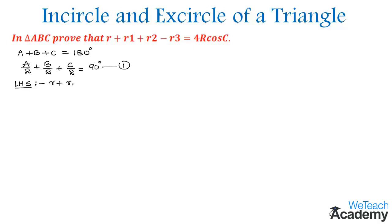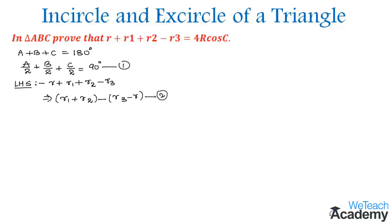To prove the example, let us consider the LHS, which is r + r1 + r2 − r3. Grouping these terms, we get the first group as (r1 + r2) and the second group as (r3 − r). Let us name this as equation 2.